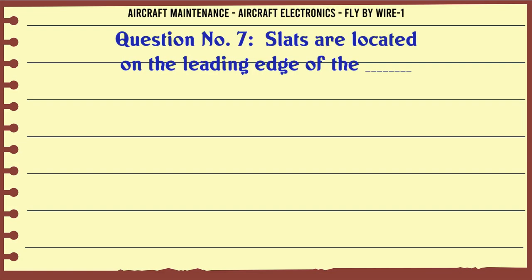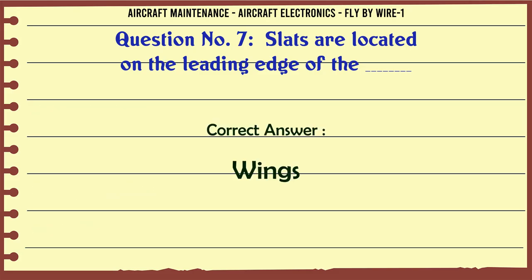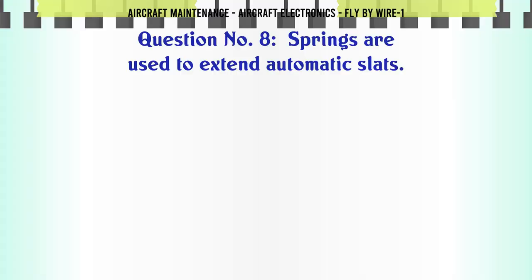Slats are located on the leading edge of the: A. Wings. B. Engines. C. Rudder. D. Tail. The correct answer is: Wings.